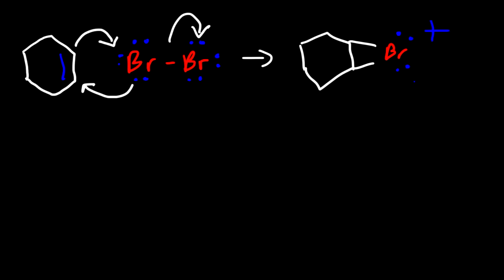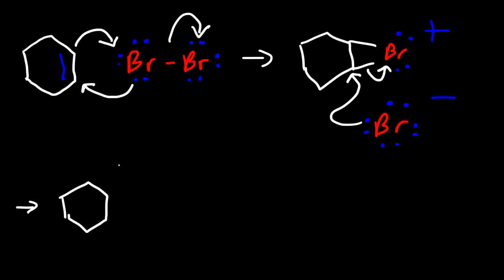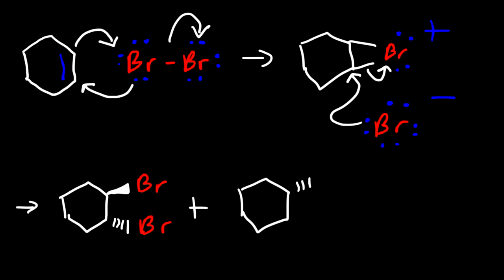This intermediate has a positive charge. The bromide ion now has four lone pairs and a negative charge. It's going to attack this carbon from the back, causing this bond to break. The product is going to have two bromine atoms added across the double bond with anti-addition. This is one stereoisomer we can get, and we could also get the enantiomer, so we get a racemic mixture of products.